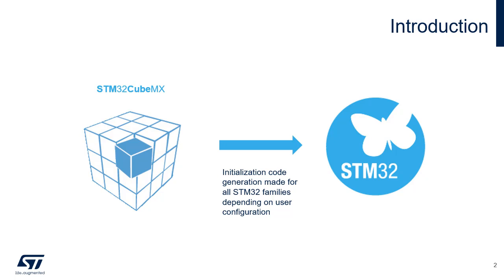The STM32 Cube HAL is an STM32 Abstraction Layer embedded software ensuring maximized portability across the STM32 portfolio. Low-Layer APIs, or LLs, offer a fast, lightweight, expert-oriented layer which is closer to the hardware than the HAL. LL APIs are available only for a set of peripherals. A consistent set of middleware components is also included, such as FATFS, FreeRTOS, LoRaWAN, SigFox, Sub-Gigahertz PHY, KMS, SecureEngine, and EmbedCrypto. All embedded software utilities come with a full set of examples.